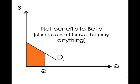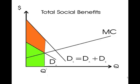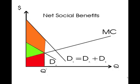The problem arises because Betty is out there. Betty also gets the benefits of the park — Al paid for them, but Betty gets the benefits without paying a dime. Her net benefits are represented by the whole orange polygon. So when we put together Al's and Betty's benefits to get social benefits, we stack Betty's demand curve on top of Al's demand curve, leading to net social benefits equal to the green triangle plus the orange polygon.